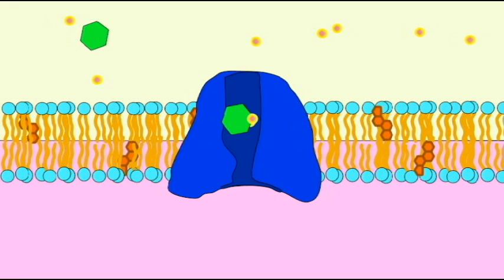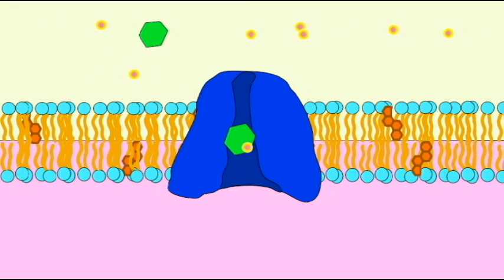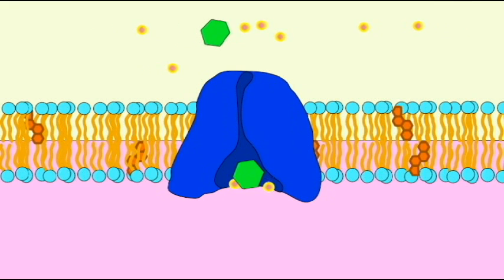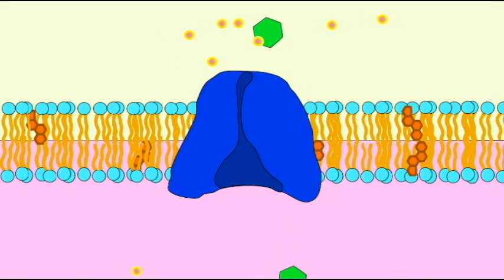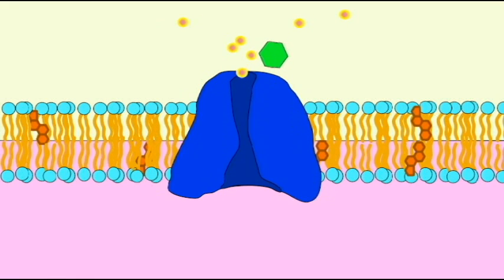Cells take advantage of this sodium gradient to move other substances as well other than sodium. There are a variety of pumps which allow sodium to enter the cell down its diffusion gradient, but only on the condition that it transport another substance as well.